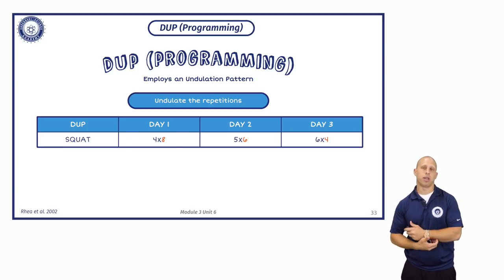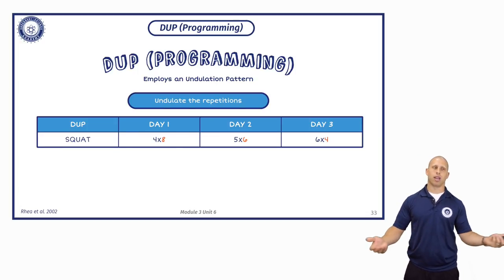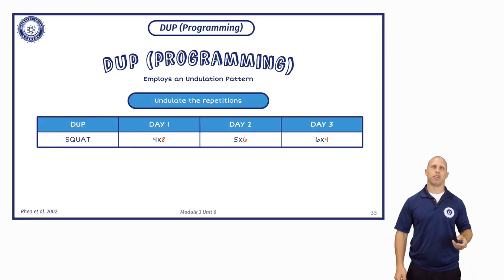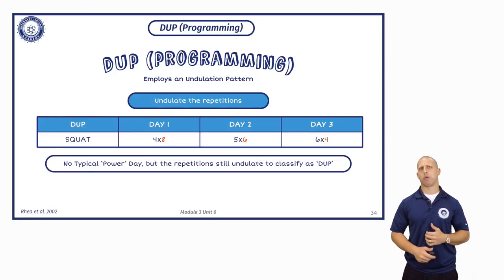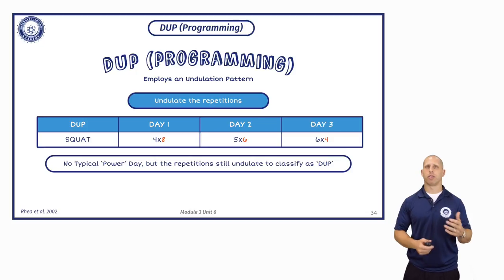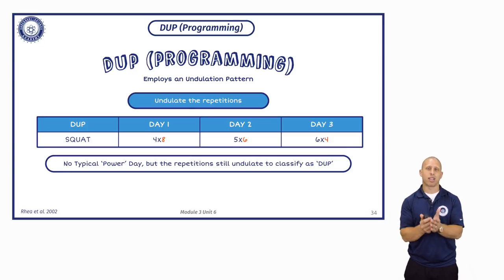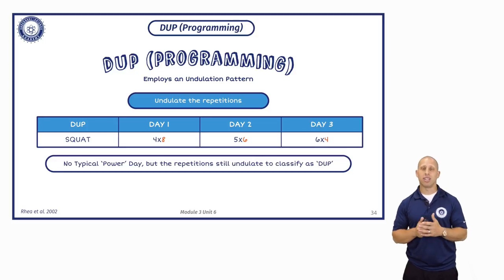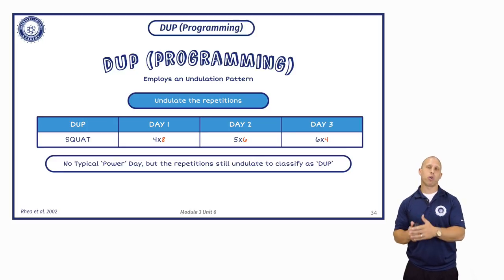Next time you go to the gym and somebody asks what supplements you can take, you can say, 'What's your undulation pattern?' and see what the look on their face is. So there's no typical power day here, but the repetitions still classify as DUP. We need to distinguish it as programming rather than periodization.